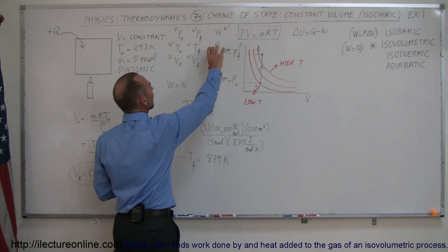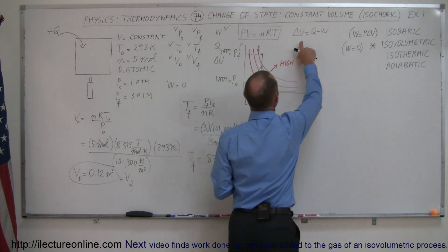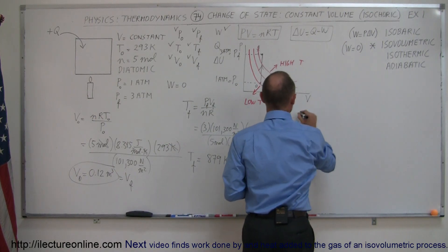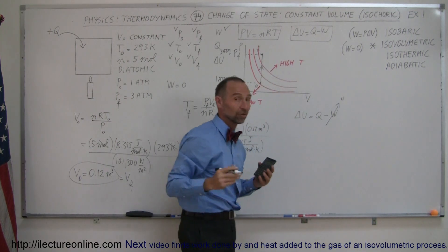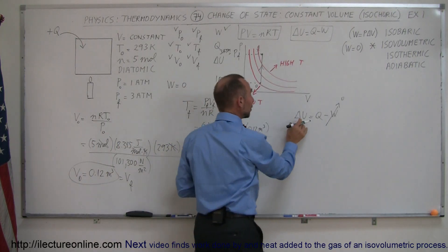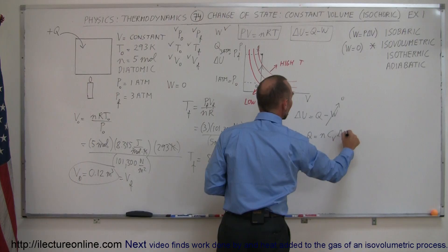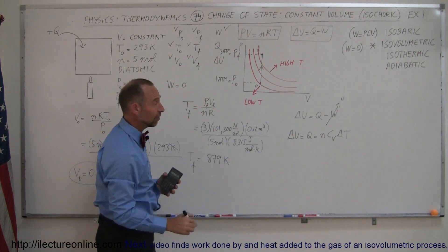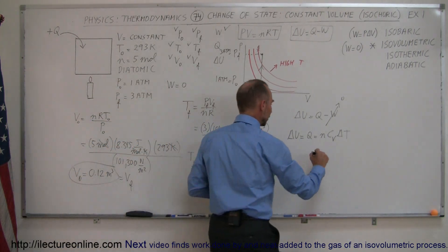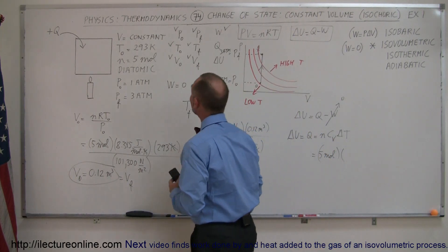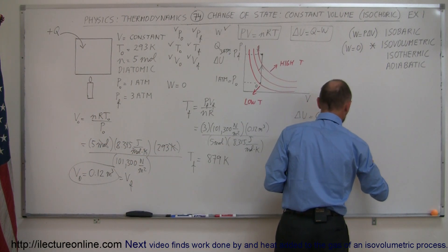Now we need to find the heat exchange and change in internal energy. Using the first law: ΔU = Q − W. Since work equals zero for an isovolumetric process, ΔU = Q. We can write ΔU = Q = nC_V ΔT, using C_V because volume stays constant. For a diatomic gas, C_V = (5/2)R.